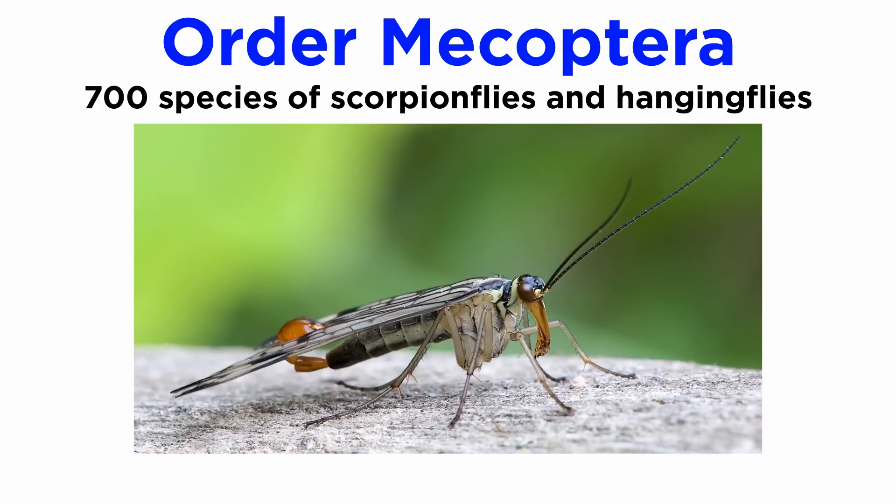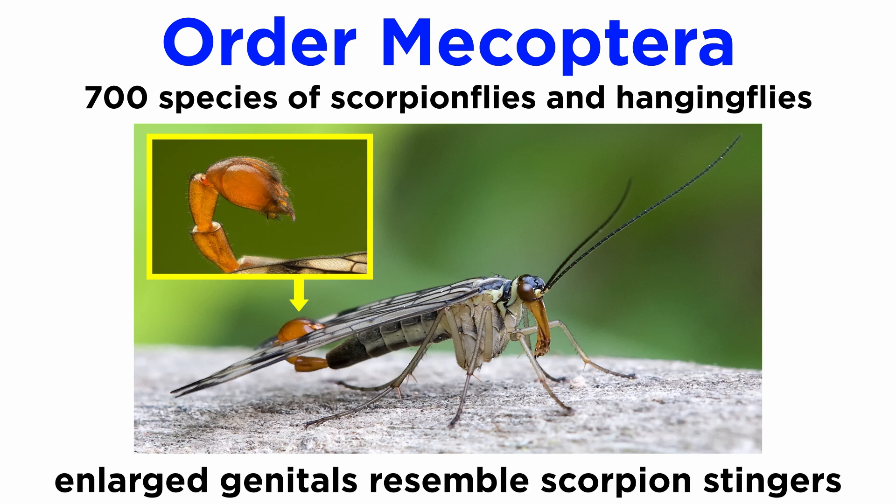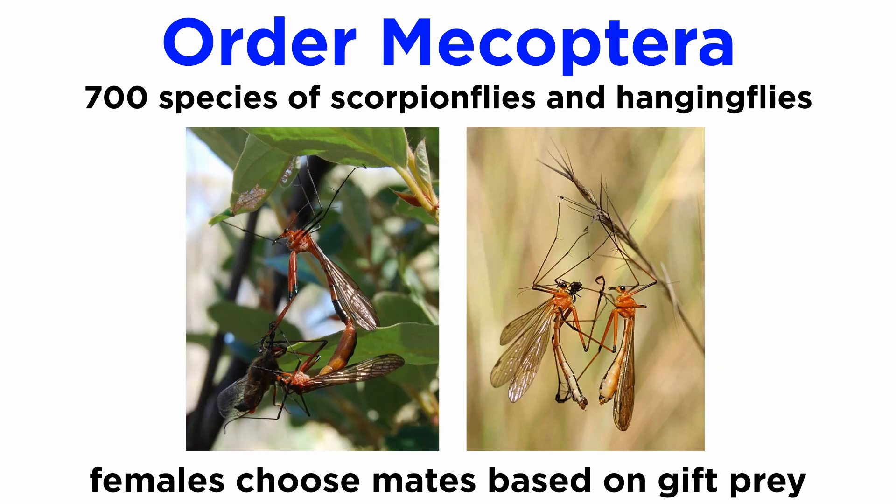The 700 or so described species of order Mecoptera are known as scorpionflies, because the males of the largest family have enlarged genitalia raised over the body that look similar to the stingers of scorpions. Other members are known as hangingflies, and have elaborate mating rituals in which females choose mates based on the quality of gift prey offered to them.